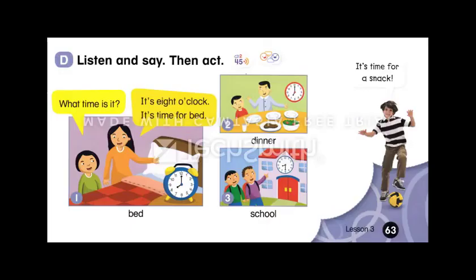Page 63, Section D — Listen and say, then act. 1. What time is it? It's 8 o'clock — it's time for bed. 2. What time is it? It's 7 o'clock — it's time for dinner. 3. What time is it? It's 8:30 — it's time for school.